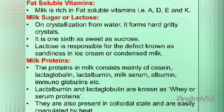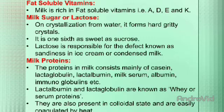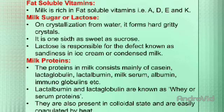The next constituent is milk sugar or lactose. On crystallization from water, it forms hard gritty crystals. It is one-sixth as sweet as sucrose. Lactose is responsible for the defect known as sandiness in ice cream and condensed milk. Lactose, the milk sugar, is only found in milk.